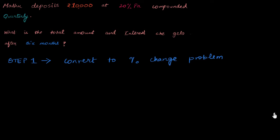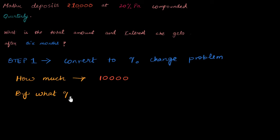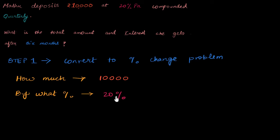I need to first find out how much money I should start with — that's 10,000, that's given. Now, by what percentage should I increase this 10,000? The answer is not straightforward; it's not 20%, because that's 20% per annum compounded quarterly. The moment I read 'quarterly,' I want everything in terms of quarters. So I have 20% every year, but a year has four quarters. If I divide by four, I get the interest rate per quarter, which is 5%. So I have to increase by 5% every quarter.